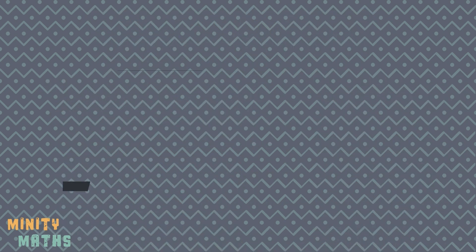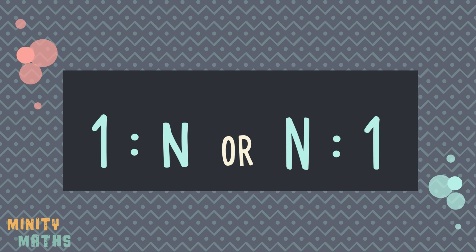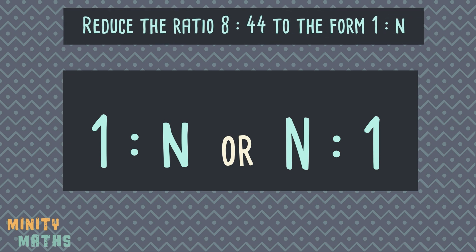Sometimes it can be beneficial to simplify the ratio in the form 1 to n, or n to 1. This is often the easier way to compare the different proportions in the ratio, even though you may be left with some decimals or fractions. Note that n is a variable placeholder for the number you will eventually calculate. Let's look at an example.